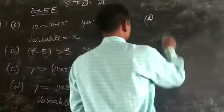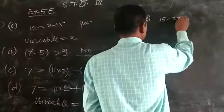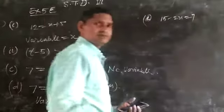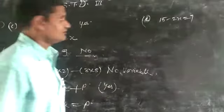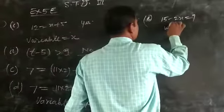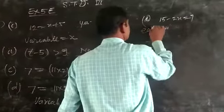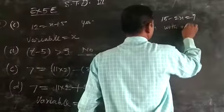Part (e): 15 minus 1. Is this with variable or without variable? This is an equation with variable.